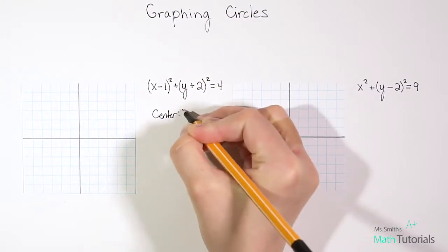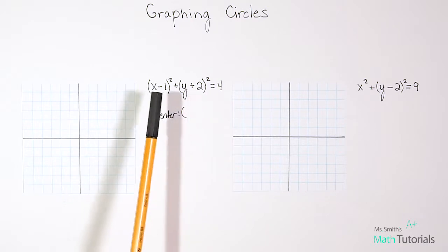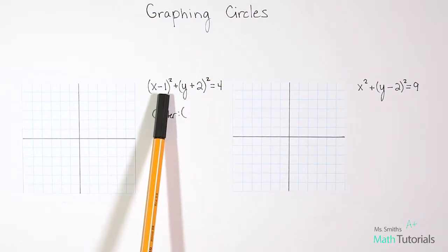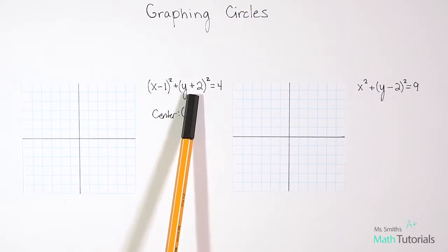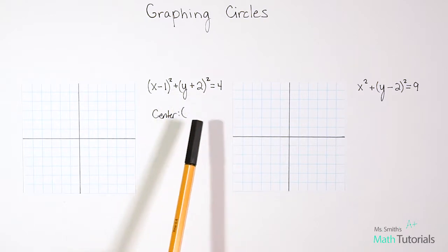So a center of a circle is an exact point on the graph. So to find the center of the circle, we look on the inside of the parentheses. So notice right here, that says a minus 1 and right here that says a plus 2. This is our x value, and this is our y value sections that we're looking at.